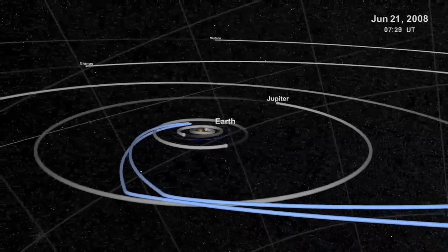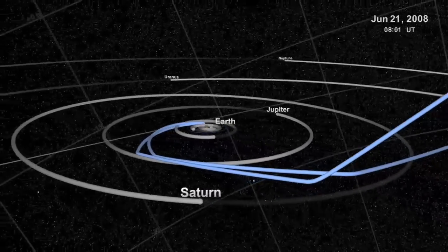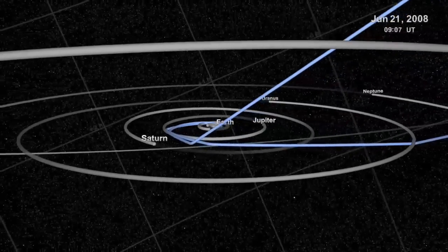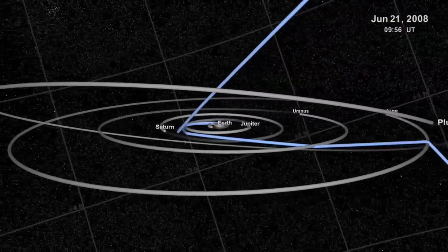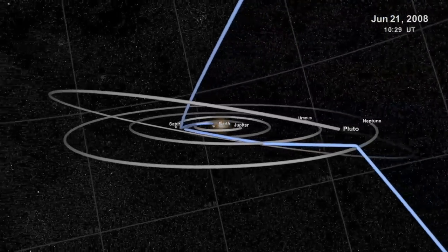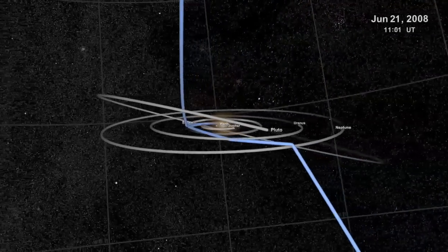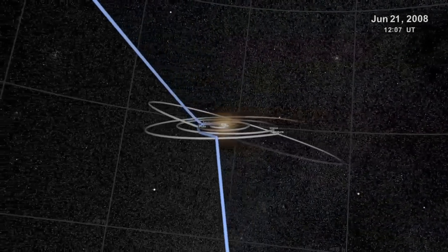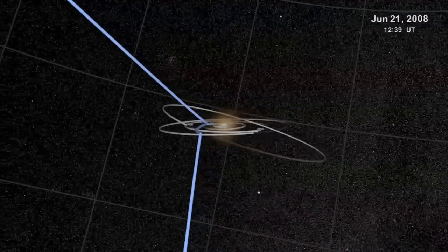Two legendary spacecraft, Voyager 1 and 2, are out there, still taking measurements. Notice the gravity assist bank shots in their flight paths. Launched in 1977, the Voyager spacecraft are the most distant artifacts humanity has ever cast out into space. Time capsules from a small blue planet.